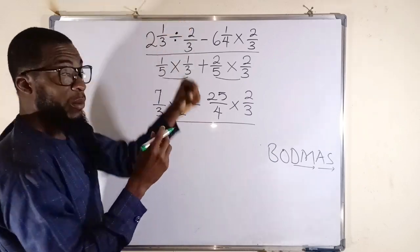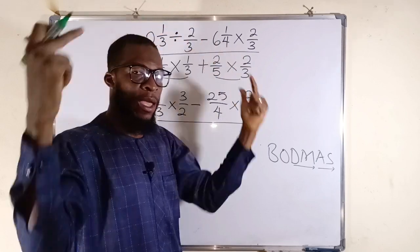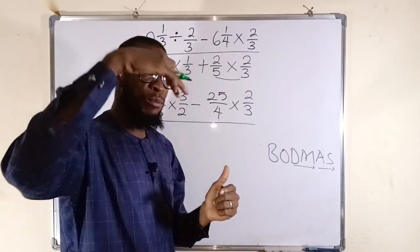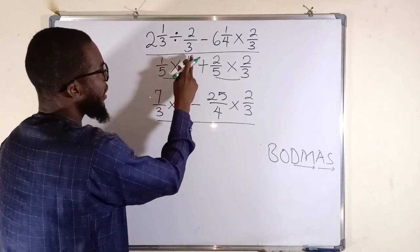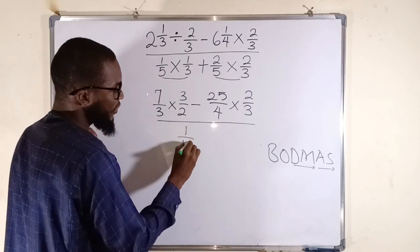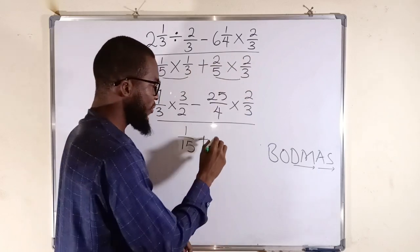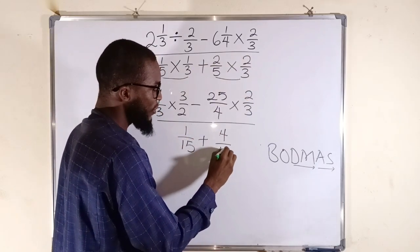1 times 1. Remember, if you're multiplying fractions, multiply the numerator separately and denominator separately. But if you have any common factor between the numerator and denominator, you can always cancel. So 1 times 1 is 1 divided by 5 times 3, which is 15. You add 2 times 2 is 4 divided by 5 times 3, also 15.